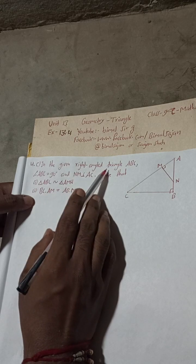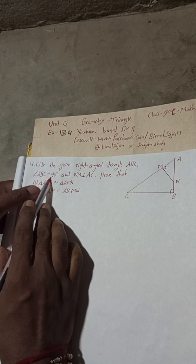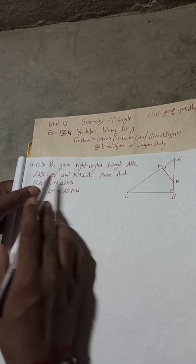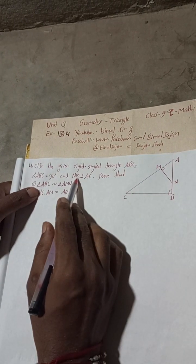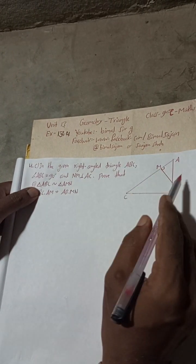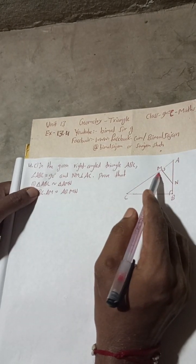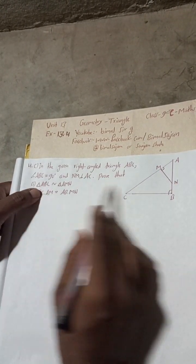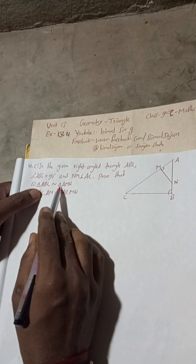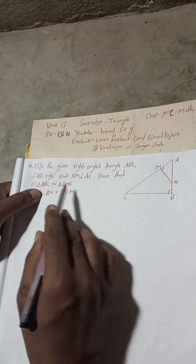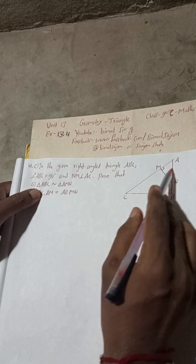For part C: in the given right angle triangle ABC, angle ABC is equal to 90 degrees — here this angle equals 90 degrees — and NM is perpendicular to AC, meaning this is 90 and this is 90. Prove that triangle ABC (the bigger triangle) is similar to triangle AMN (the smaller triangle).